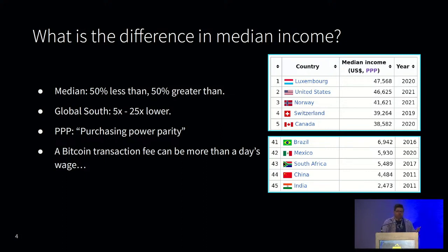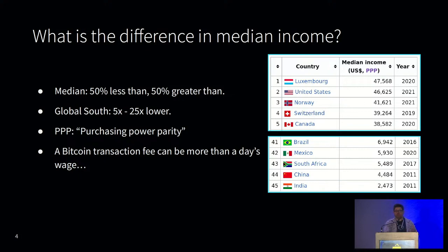During the most recent transaction surge on Bitcoin, fee rates were as high as 600 sats per virtual byte, which meant that a priority transaction was $40. It's obvious that that's far too expensive for the Global South if you have to pay multiple days of your wage for one on-chain transaction.